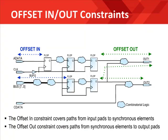The offset constraints cover paths from input pads to synchronous elements — that is the offset in — and synchronous elements to output pads — that is called the offset out constraint. Just as with the period constraint, the global offset constraints are associated with the clock net, which automatically groups the synchronous elements that will be considered as path endpoints. In this example, we have one clock signal driving the same five flip flops. The offset in constraint covers the nine input pads, where the input bus is eight bits wide.